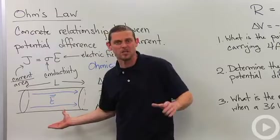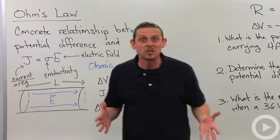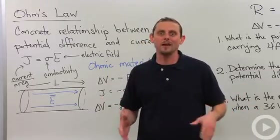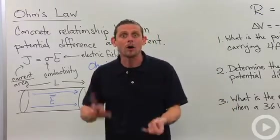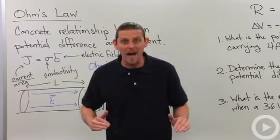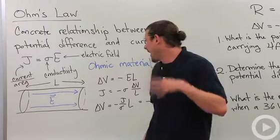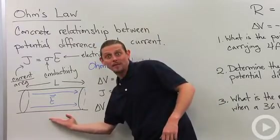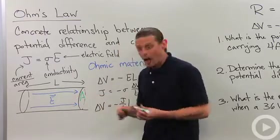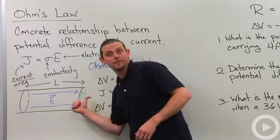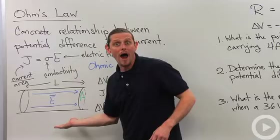Now let's try to turn this into something associated with current rather than current density, and something associated with potential difference rather than electric field — because these are the things we have easy access to measure. We don't want to measure current density and electric field because they're more annoying. So let's take a wire with a cross-sectional area A, and we're going to apply an electric field across it. We'll consider a length L of this wire.